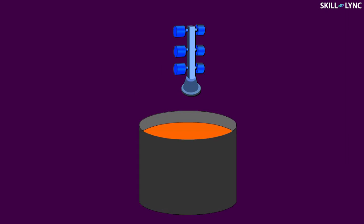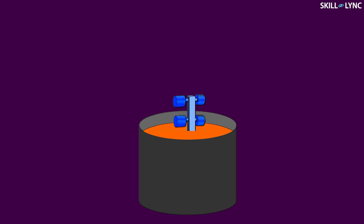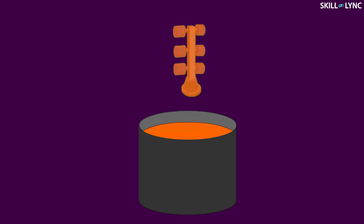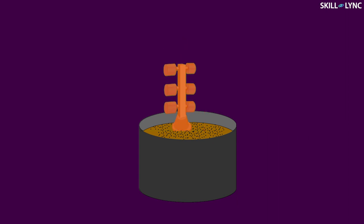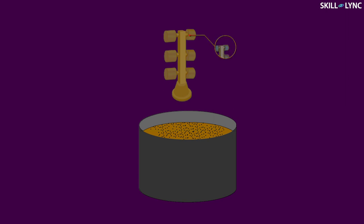Several wax patterns can be combined to manufacture a single complex pattern. The pattern is then dipped into a slurry which consists of refractory materials like silica and binders. The slurry also includes water, ethyl silicate, and acids. This slurry forms a coating around the pattern which is allowed to dry. After this initial coating has dried up, the pattern is coated repeatedly to increase its thickness. To obtain a casting with excellent surface finish, the initial coating consists of smaller particles while the subsequent coatings consist of larger particles.